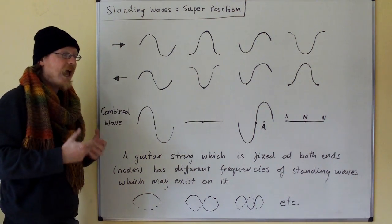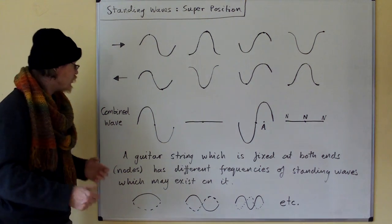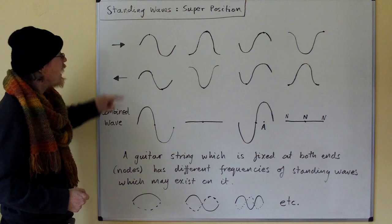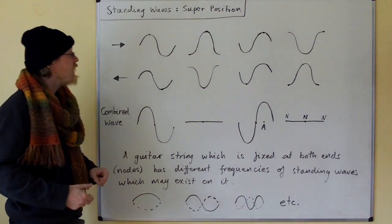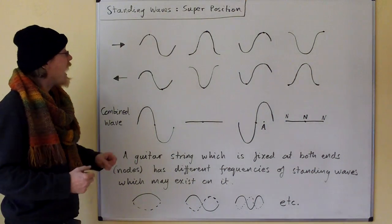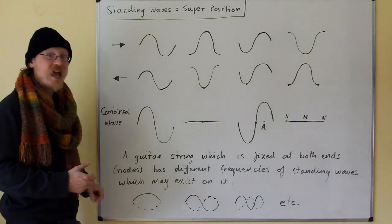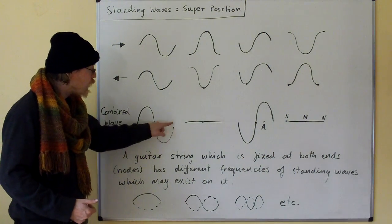How do we add these waves up? We use the principle of superposition to get the combined wave. These waves are what we call in phase. They're in the same place in their wave cycle, and when they add up you get constructive superposition and a larger waveform.